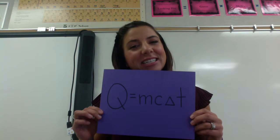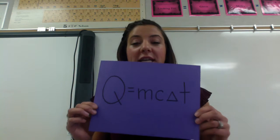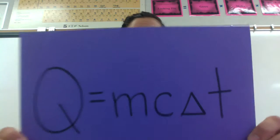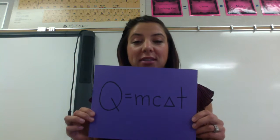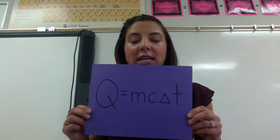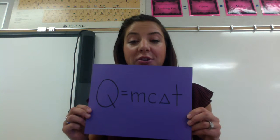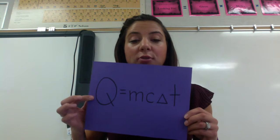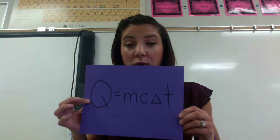Heat. Q equals MC delta T. If you ever hear the word heat, you're going to use this formula. Q equals MC delta T represents the chemical energy causing a change in kinetic energy, so kinetic energy is Q. Q is measured in kilojoules.